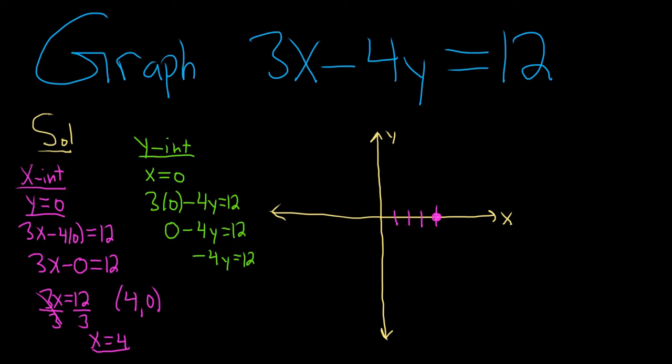Because the y is being multiplied by negative 4, we just divide by negative 4. That gives us y equals negative 3.